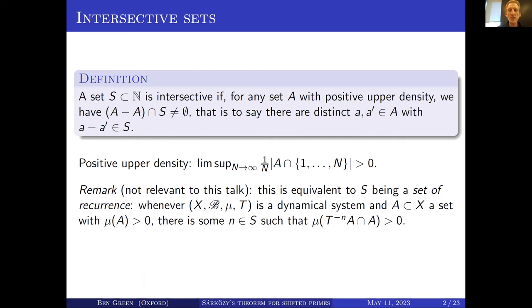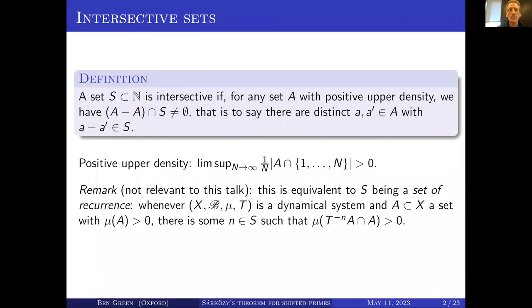If you take a measure-preserving system — a set X with a measure on it and a measure-preserving self-map T — and if you take a set A of positive measure in X, then there's some n in your set S, your set of recurrence, for which the set A comes back to itself under the map T in time n. So the measure of T^{-n}A intersect A is positive.